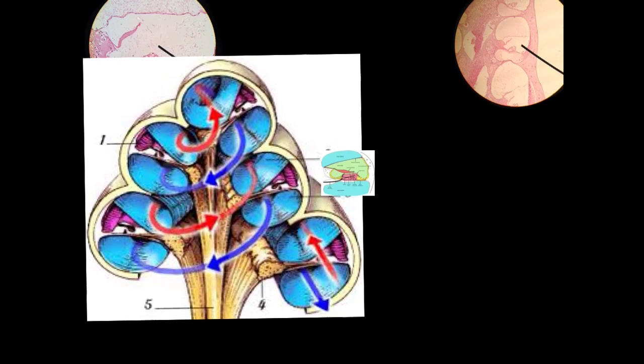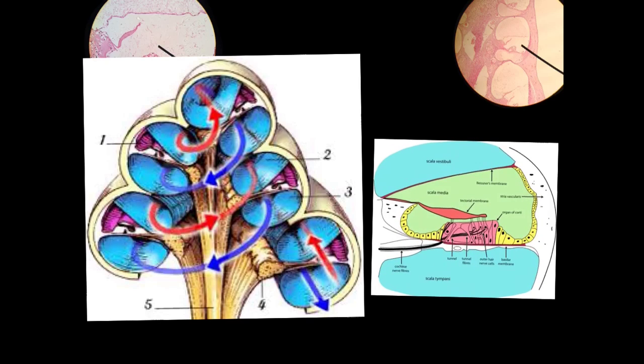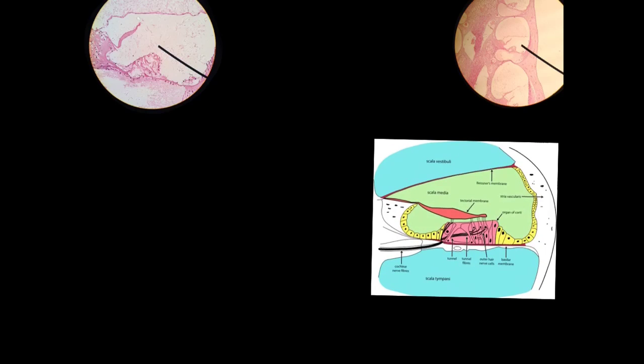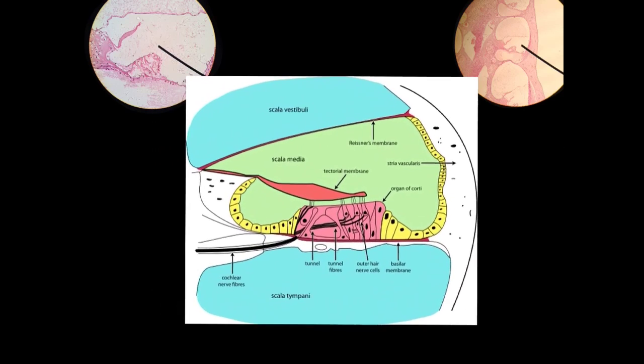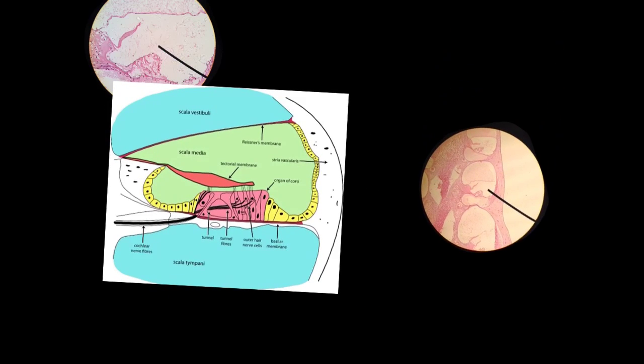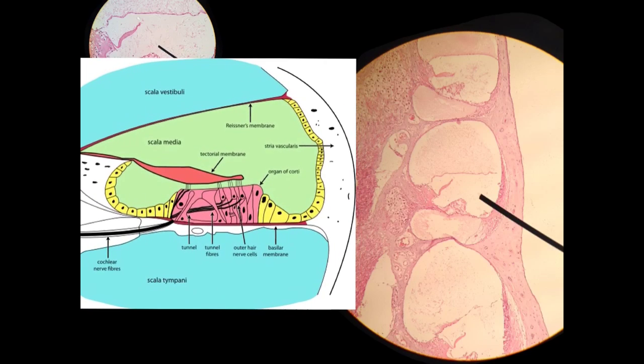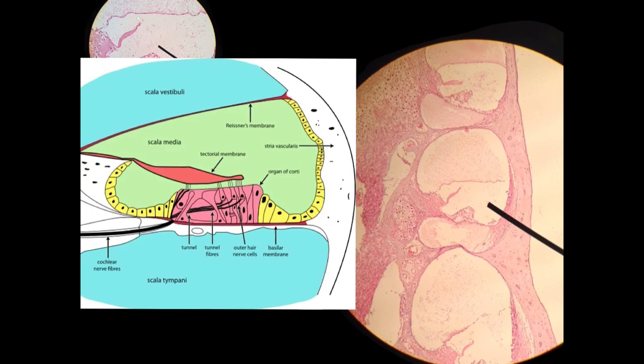And what we're going to look at specifically is one picture of the organ of Corti. So just to make sure you know where I'm coming from, it's coming from right here. So we're literally going to blow this up here. Now we're looking at where all the action is. And this picture is labeled nicely, so I'll set it right next to the real picture of the actual tissue. And you can kind of take a look and try to match it up for yourself.